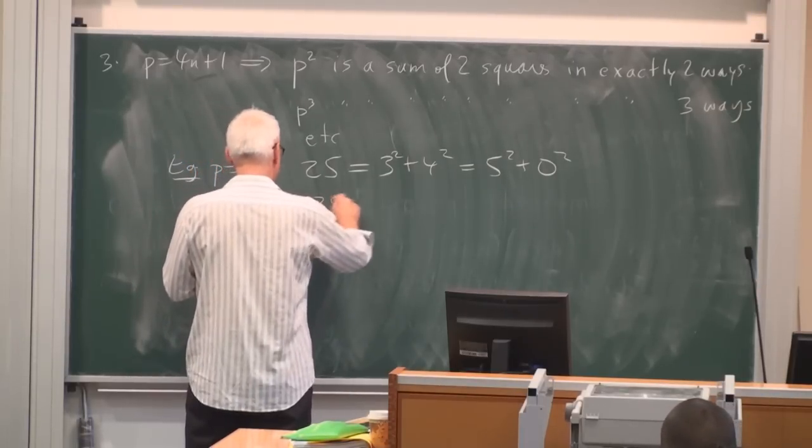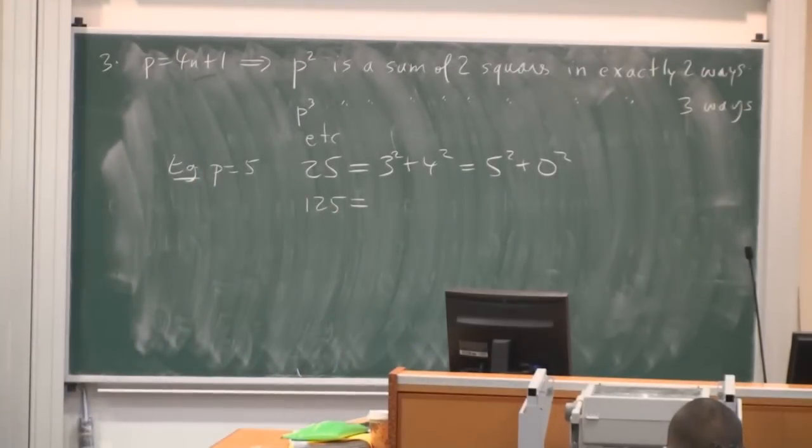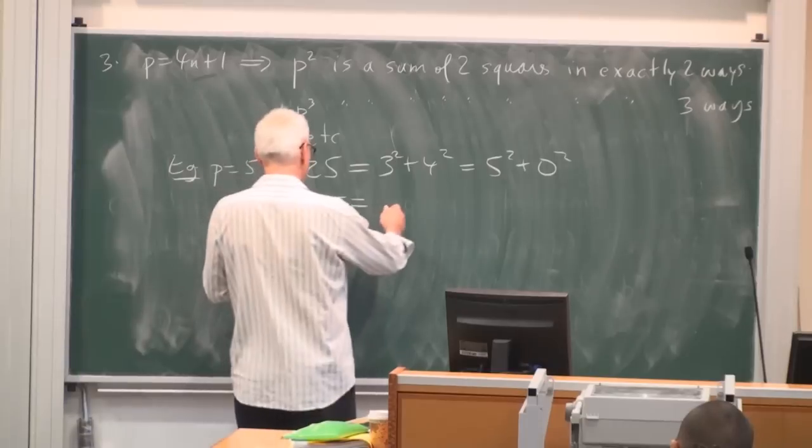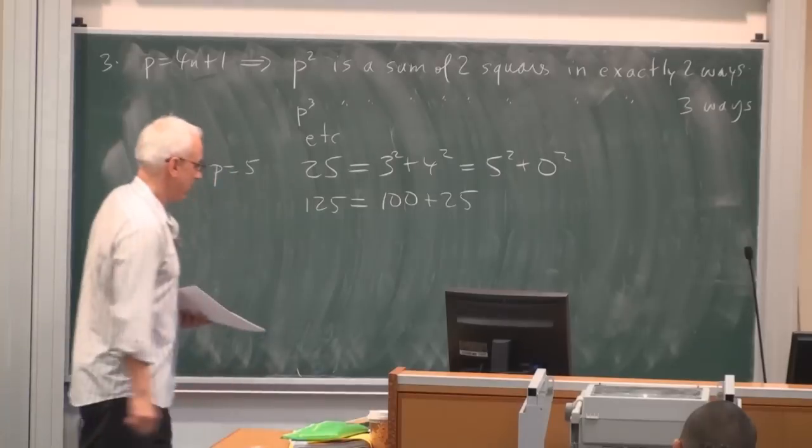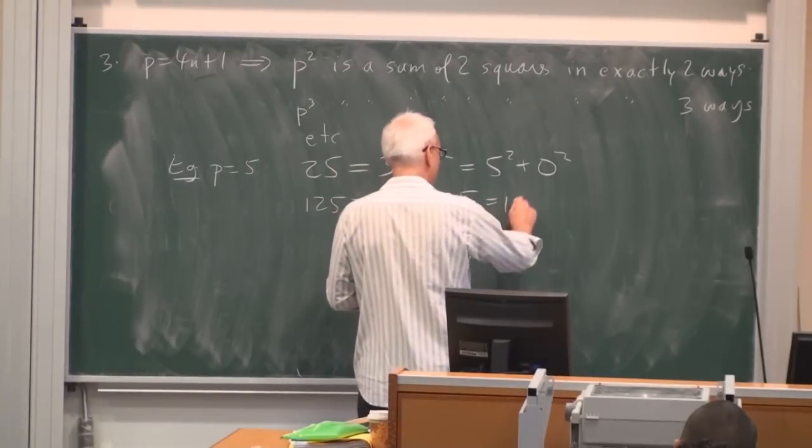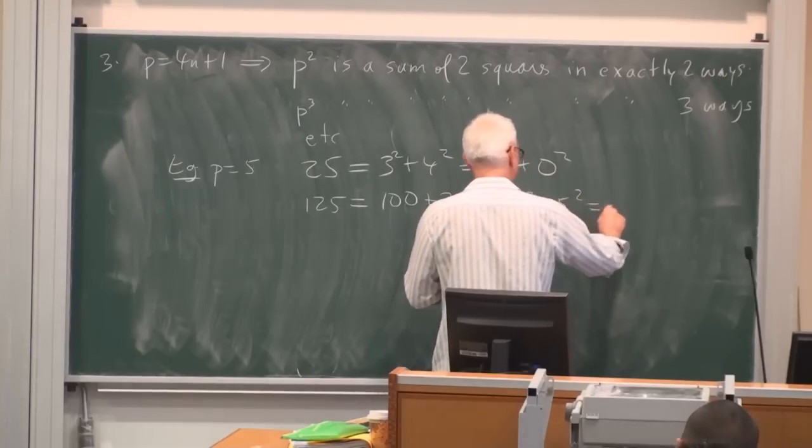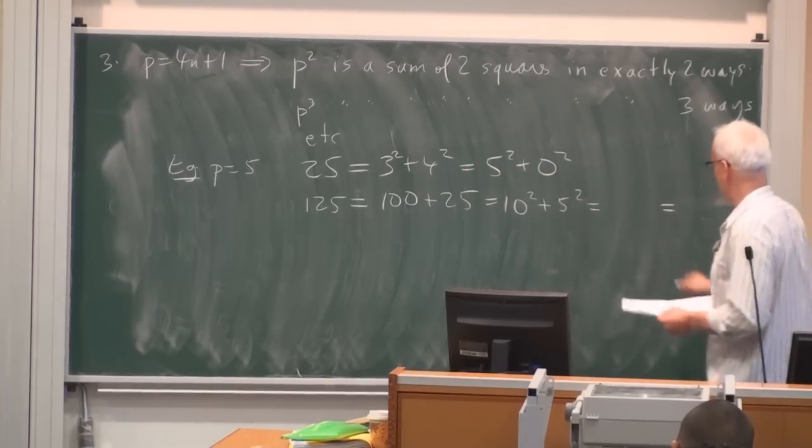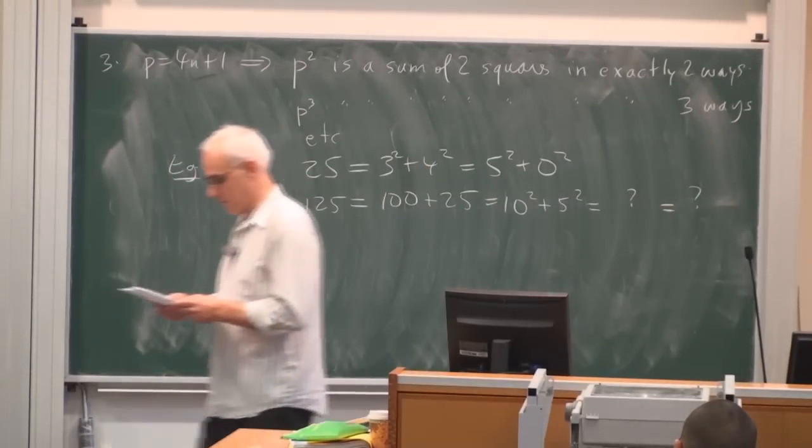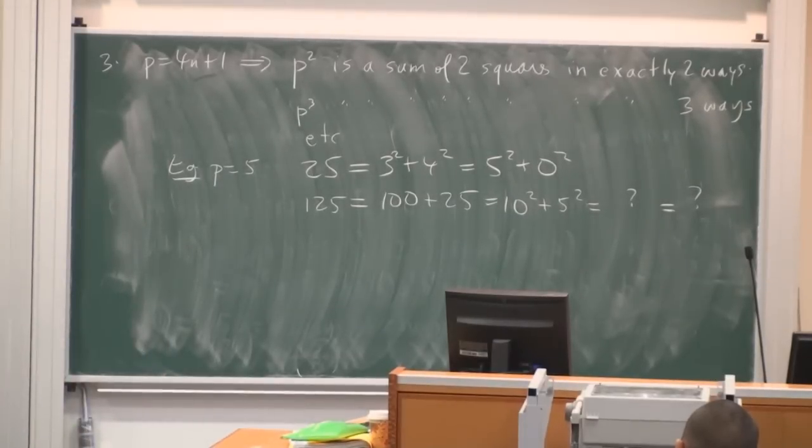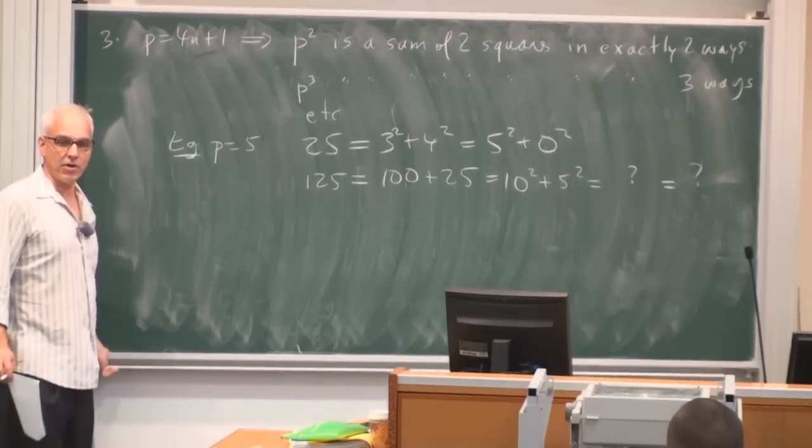Okay. Okay, well, 125. That's equal to 100 plus 25. So it's 10 squared plus 5 squared. And there's also two other ways. Maybe I'll leave you to try to figure out what they might be. So this became part of a very big theory, just the start.